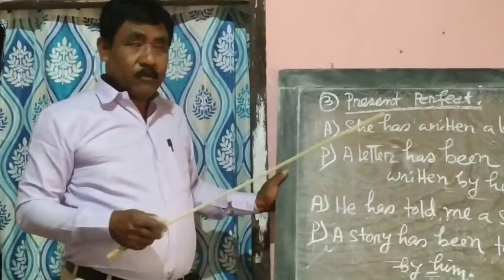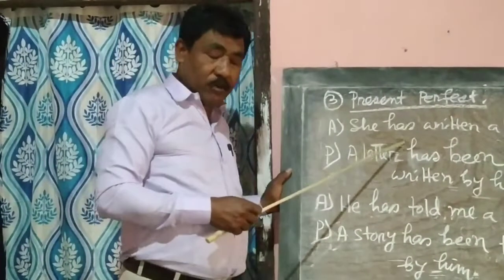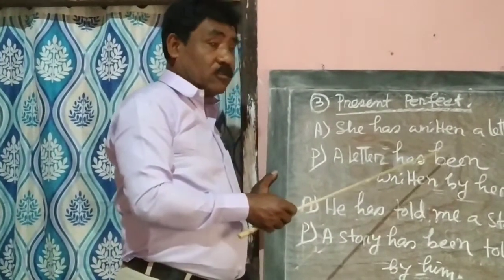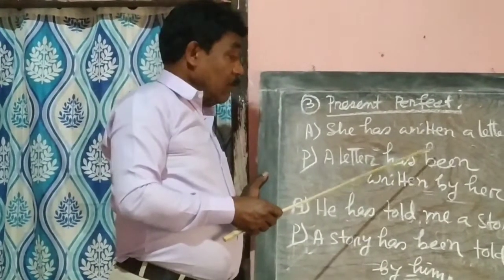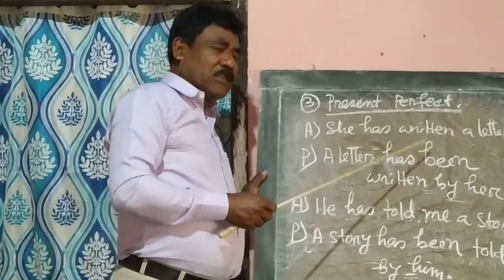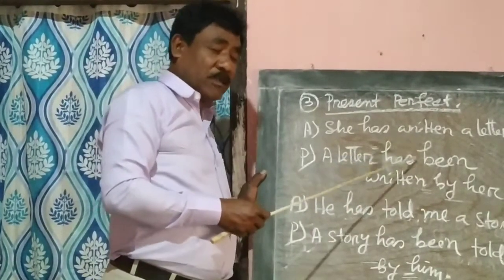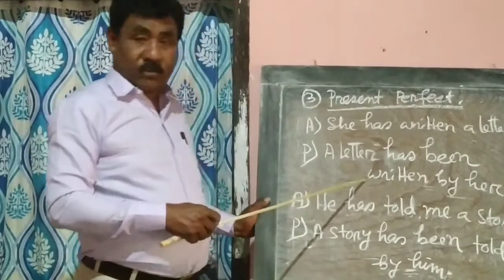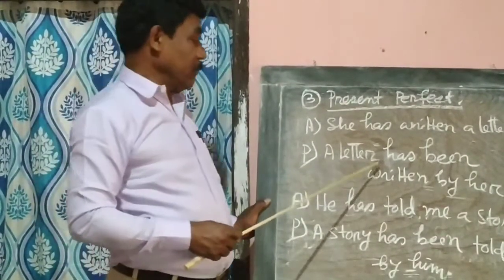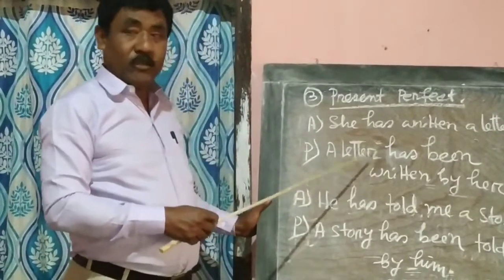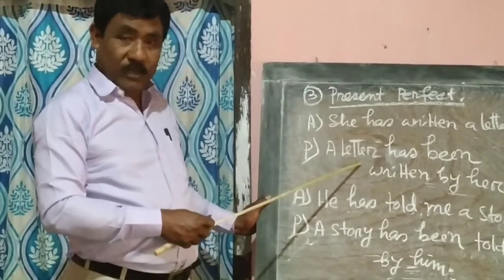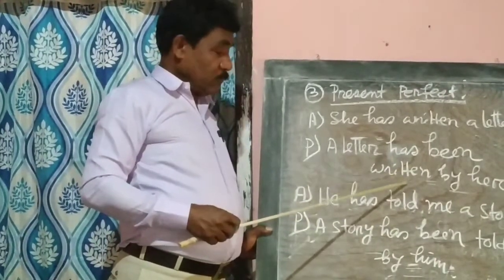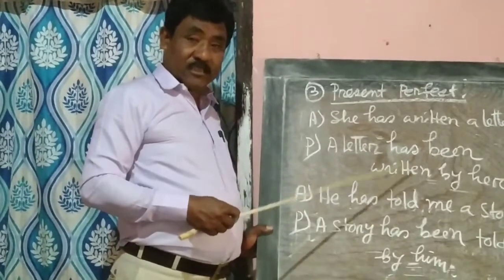I will show you how to handle preposition and retained objects. When a sentence has a double object and a preposition, the structure changes accordingly. Thank you so much.